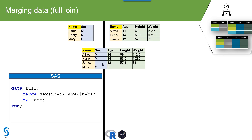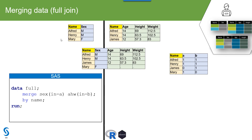The IN= operator in SAS identifies unique values of the BY variable across all datasets. We use IN=A and IN=B as temporary variables. When joining, SAS identifies all unique name values across both datasets — Alfred and Henry are common, while James and Mary are exclusive to one. The temporary variable B will be 1 if a name value is coming from the AHW dataset, and similarly variable A will be 1 for names coming from the sex dataset. Names not present in a given dataset get a value of 0.